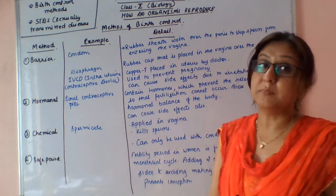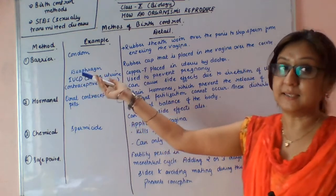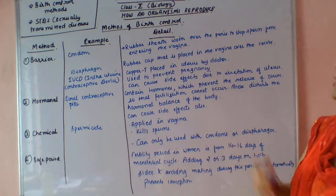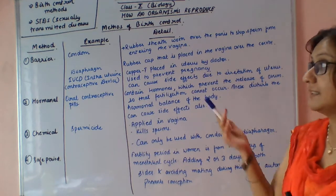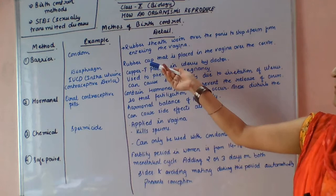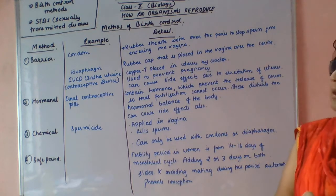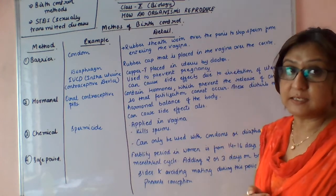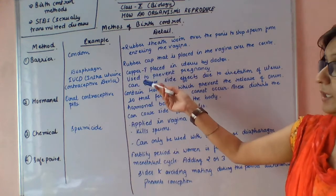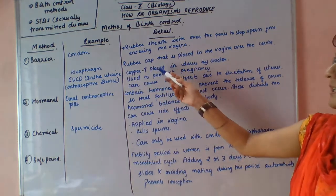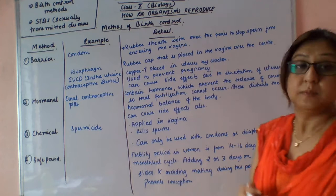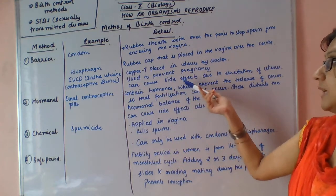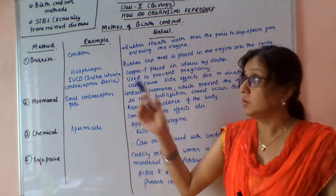The first is the barrier method. Examples include the condom, which is a rubber sheet placed over the penis to stop sperm from entering the vagina. Next is the diaphragm, which is also a rubber trap placed in the vagina over the cervix. Third is IUCD — intrauterine contraceptive device — a copper T placed in the uterus by doctors to prevent pregnancies. It can cause side effects due to irritation in the uterus.